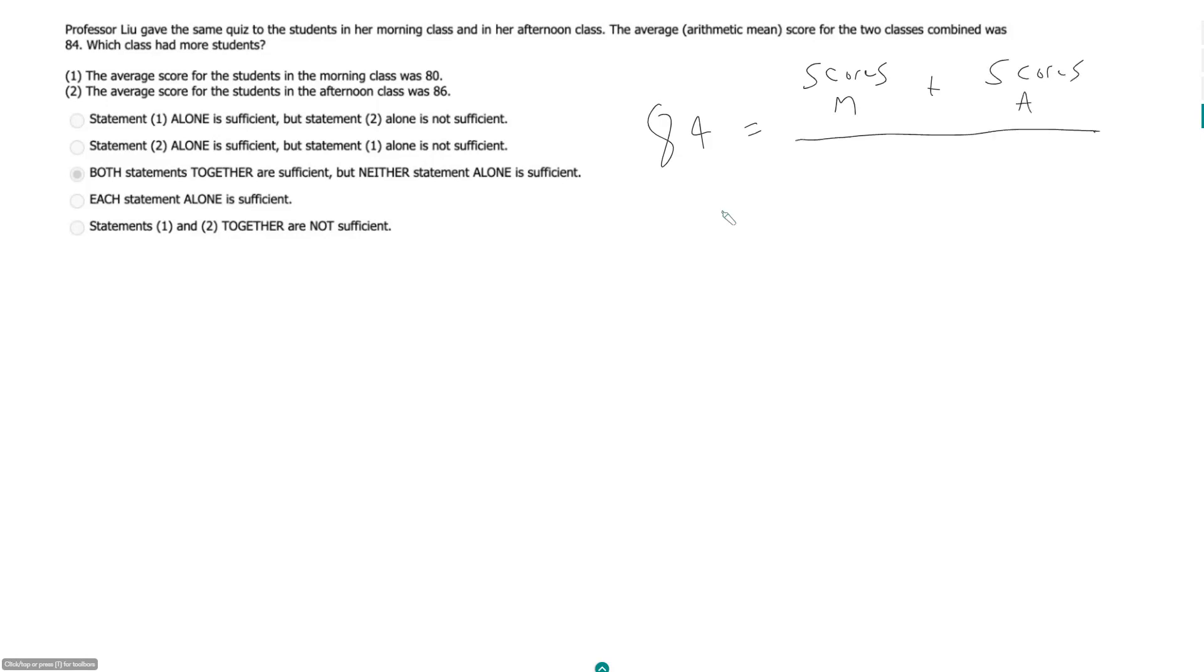So the sum of our scores over the total number of students. So that would be our students in the morning class plus our students in the afternoon class. So I'll say M and A represent the number of students in each class.